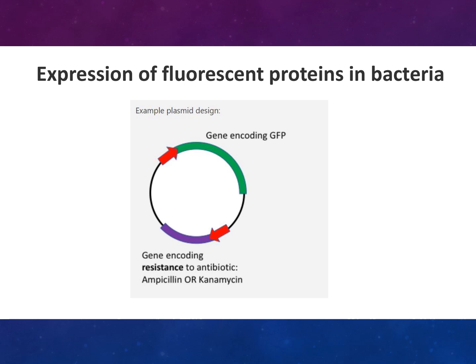You can see here an example plasmid design. It has the gene encoding GFP and the gene encoding resistance to the antibiotics ampicillin or kanamycin. So what happens here is: if you were to treat these colonies with ampicillin or kanamycin, the ones that have got the plasmid with GFP in it would not die, but the ones that don't would die with ampicillin or kanamycin treatment.